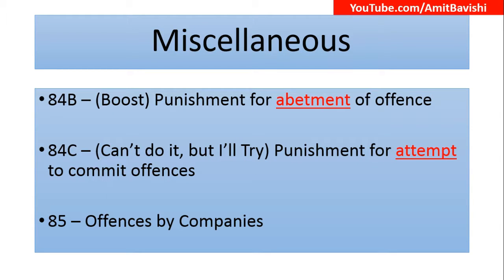Now in the miscellaneous section there are three sections: 84B, 84C, and 85. Section 84B — B for boost. Boost means to encourage, so 84B covers punishment for abatement of offense. If you are abating someone to commit an offense, the punishment falls under 84B. Then Section 84C — the mnemonic is 'can't do it but I will try.' You haven't committed the offense but you are trying to — you attempted to penetrate the system but were not able to. So 84C covers attempt to commit an offense.